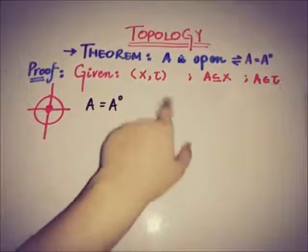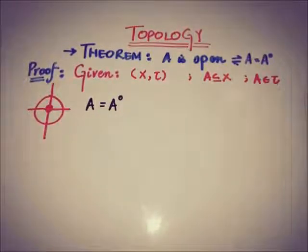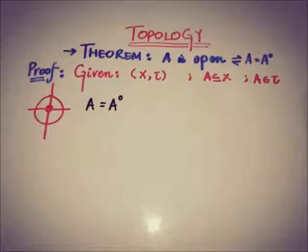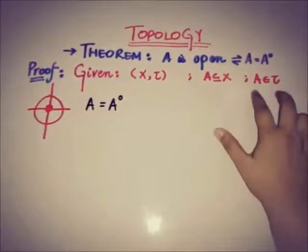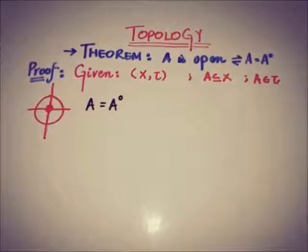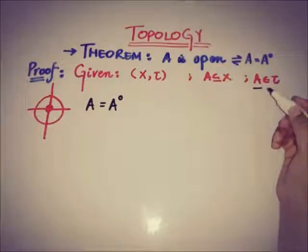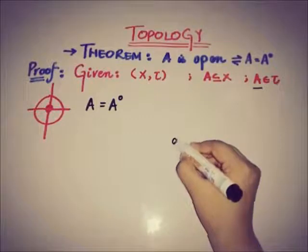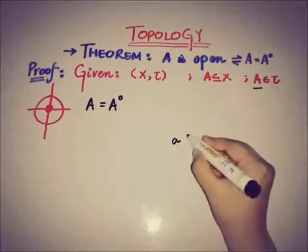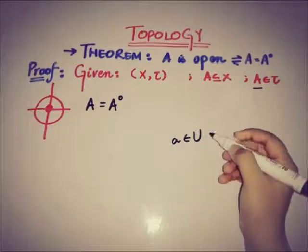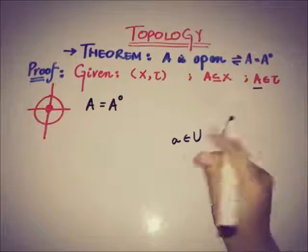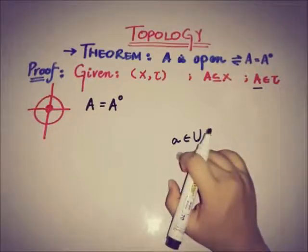By the definition of an open set, since A is open, A belongs to the topology, which means for every element a of A there exists an open neighborhood U that contains that point a.